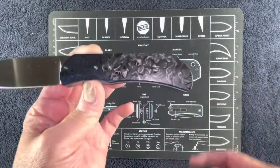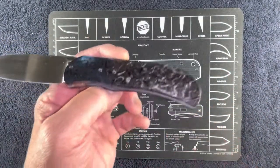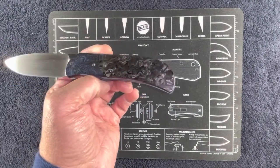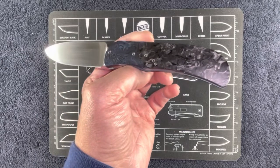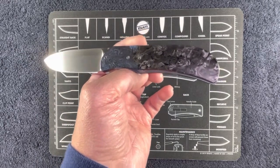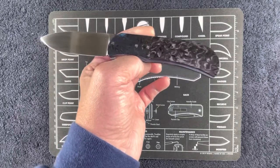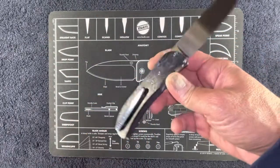The construction is a liner lock knife, as you guys can see. This is part one of the video. Part two I'm going to bring up the frame lock version of this knife and we're going to compare the two, but I just wanted to give you guys a good look at this one.